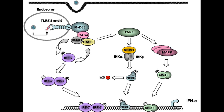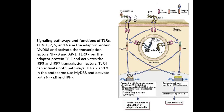TLR4 signals through both MYD88 and TRIF and is able to induce both types of responses. The endosomal TLRs 7 and 9, which are most highly expressed in plasmacytoid dendritic cells, signal through a MYD88-dependent, TRIF-independent pathway that activates both NFκB and IRFs. Therefore, TLR7 and TLR9, like TLR4, induce both inflammatory and antiviral responses. Signaling pathways and functions of TLRs: TLRs 1, 2, 5, and 6 use MYD88 and activate NFκB and AP1. TLR3 uses TRIF and activates IRF3 and IRF7. TLR4 can activate both pathways. TLR7 and 9 in the endosome use MYD88 and activate both NFκB and IRF7.